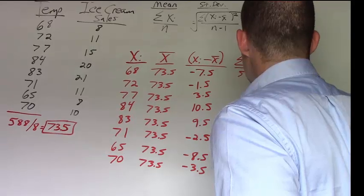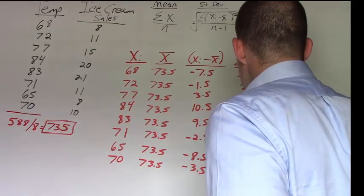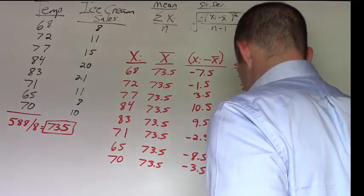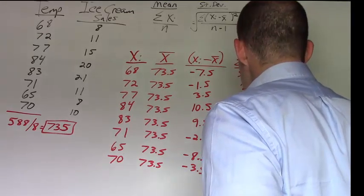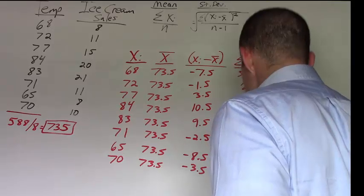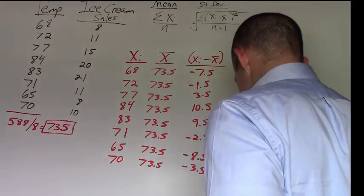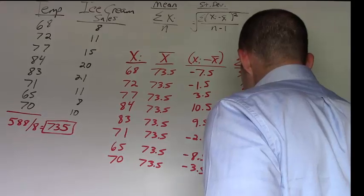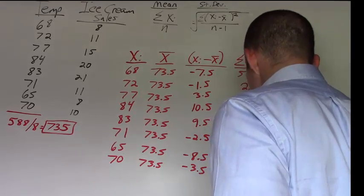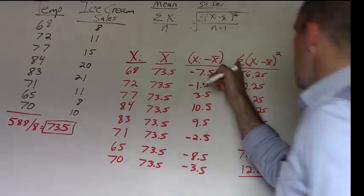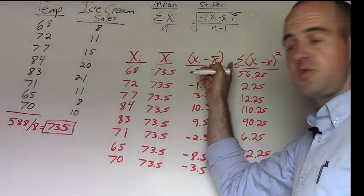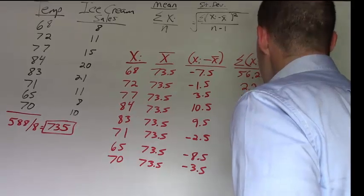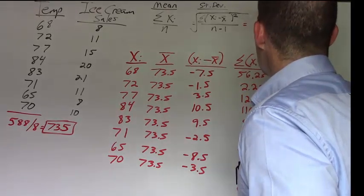So if we square this, we get 56.25, 2.25, and again, I'm squaring this particular column right here, 12.25, 110.25, 90.25, 6.25, 72.25, and 12.25. And this is the column that I actually want to sum. And if I do sum that, adding all of these up, I get a value of 362. And this is the value up here for our numerator.